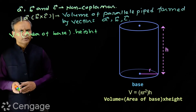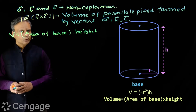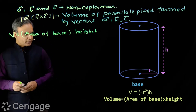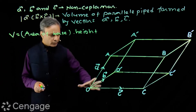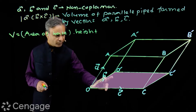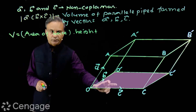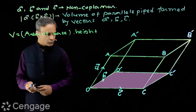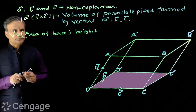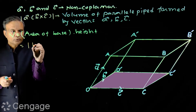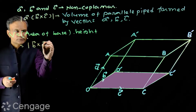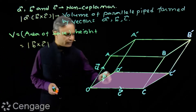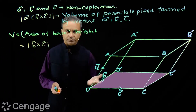So we have a common formula for these types of figures: Volume equals area of base times height. In our parallelepiped, the base is formed by vectors B and C. So the area of this base will be the modulus of B cross C — the area of this parallelogram base.